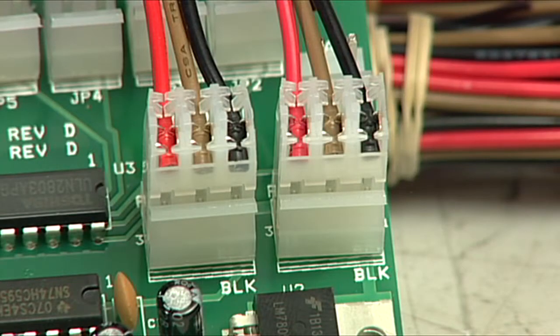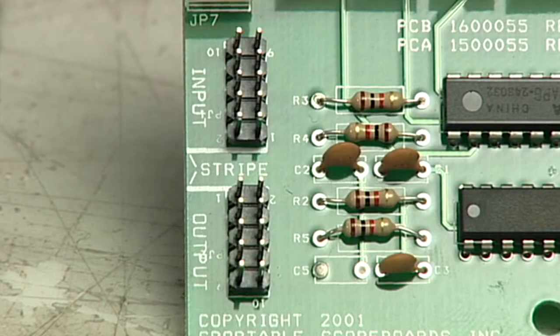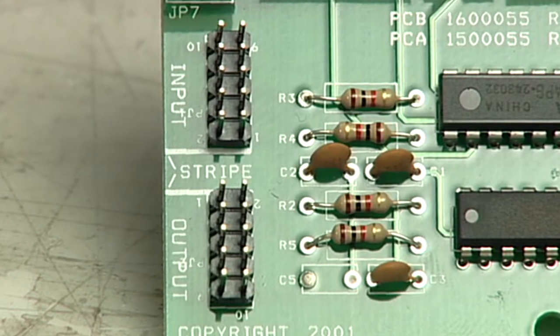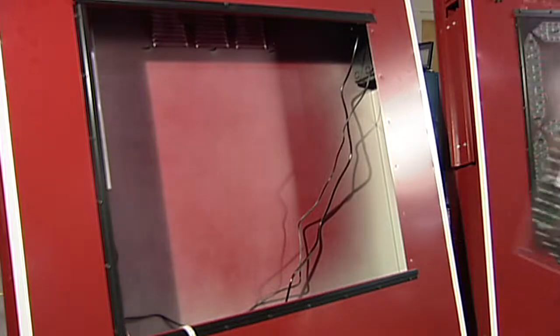The three wire power cables can attach to either connector. Remove the two three wire power cables and the five pin ribbon cables from the digit. Carefully remove the entire digit from the scoreboard.